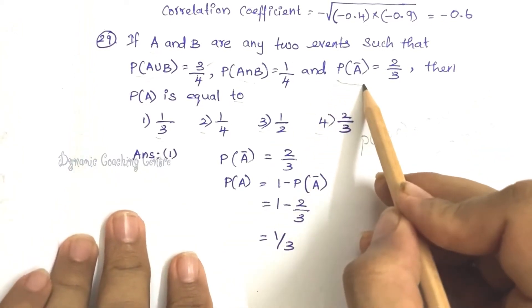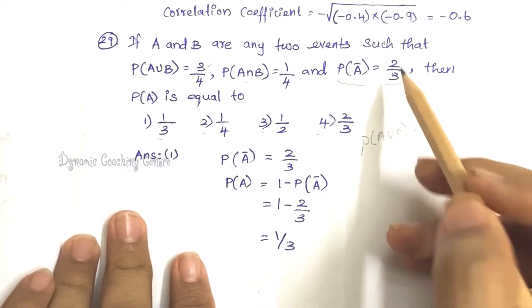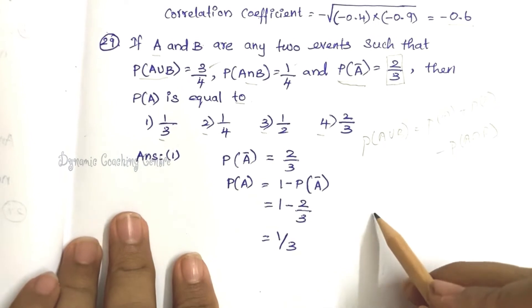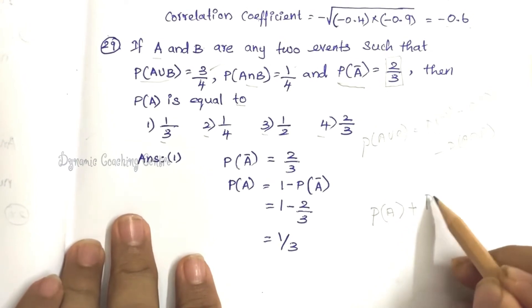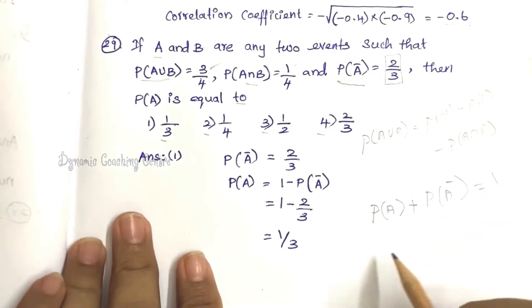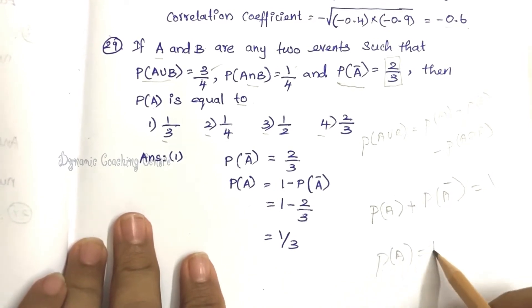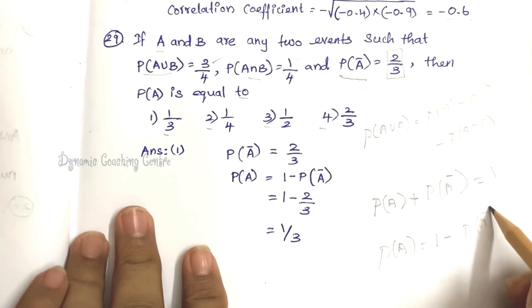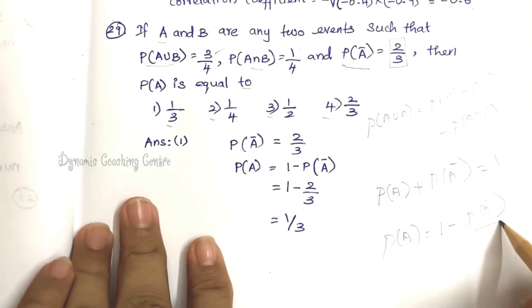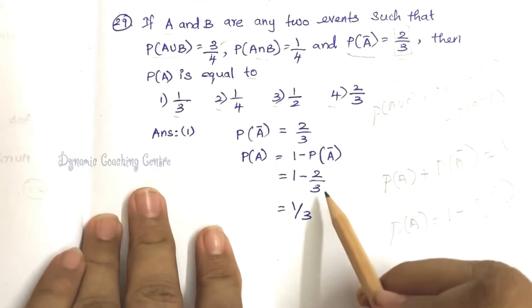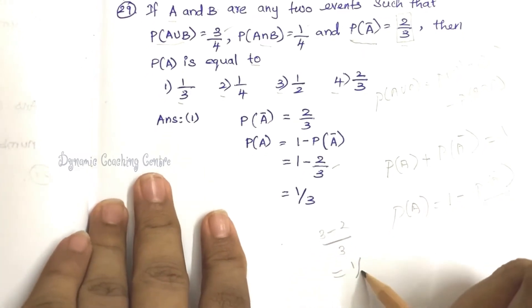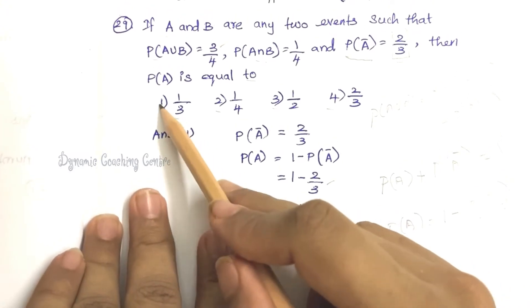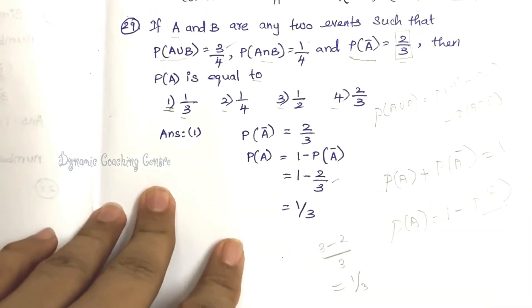Since P(A bar) = 2 by 3, we get P(A) = 1 minus 2 by 3 = 1 by 3. So the correct answer is option 1. This is an easy probability question.